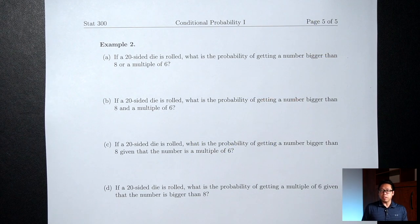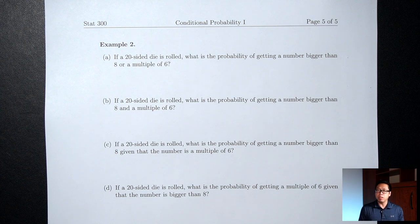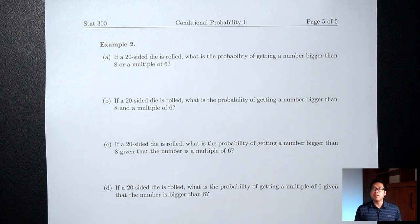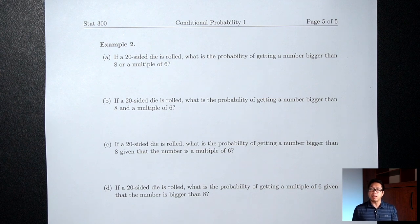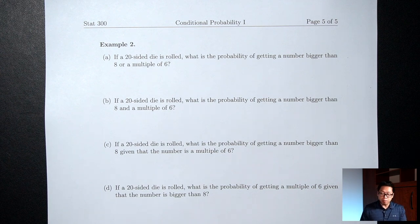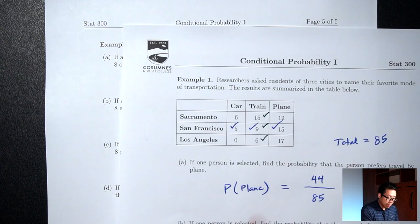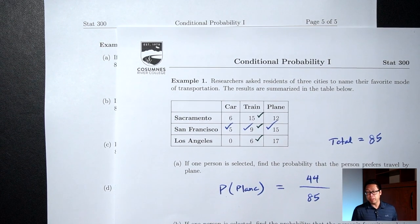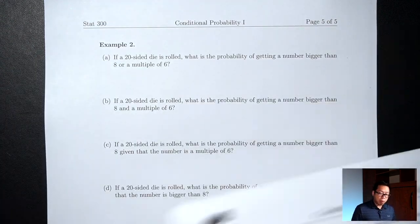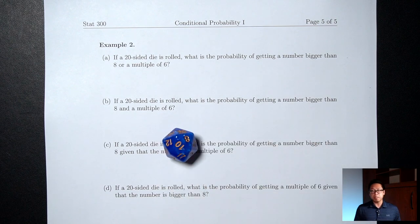We talked about a lot of stuff today: the difference between 'and' and 'or,' conditional probabilities with the word 'given,' picking multiple people using the multiplication rule, and probabilities involving 'at least one.' We talked about all of that in the context of a contingency table. Now I want to talk about all those things in the context of a dice.